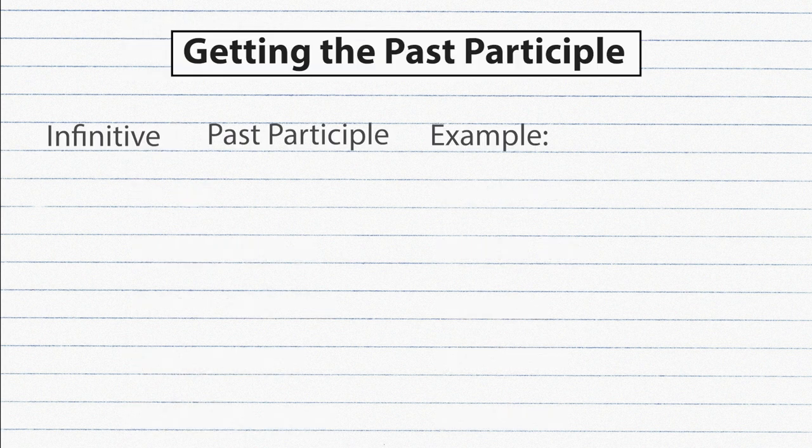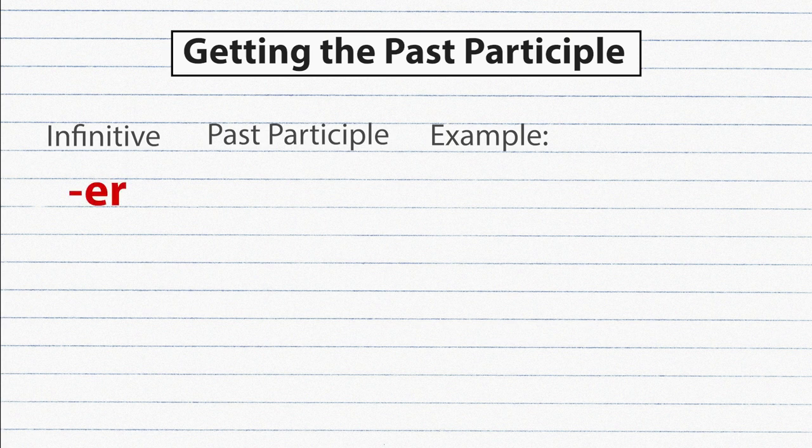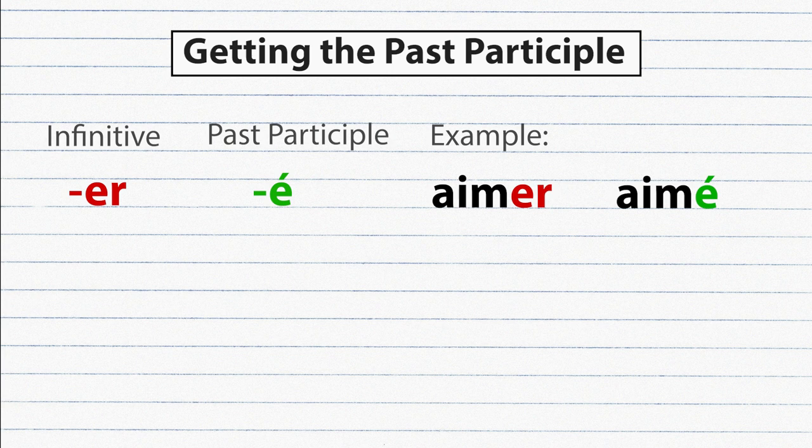Next we need the past participle. For the verbs that end in ER we add É. Example: aimer, aimé.